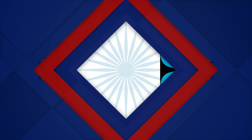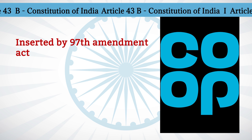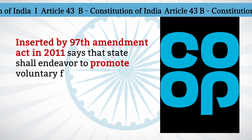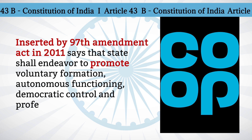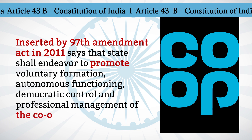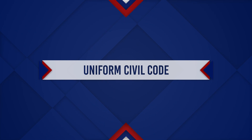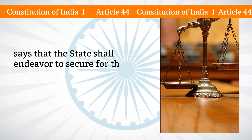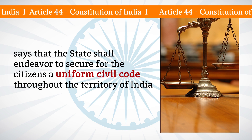Article 43B, inserted by the 97th Amendment Act in 2011, says that the state shall endeavor to promote voluntary formation, autonomous functioning, democratic control, and professional management of the co-operative societies. Article 44 says that the state shall endeavor to secure for the citizens a uniform civil code throughout the territory of India.